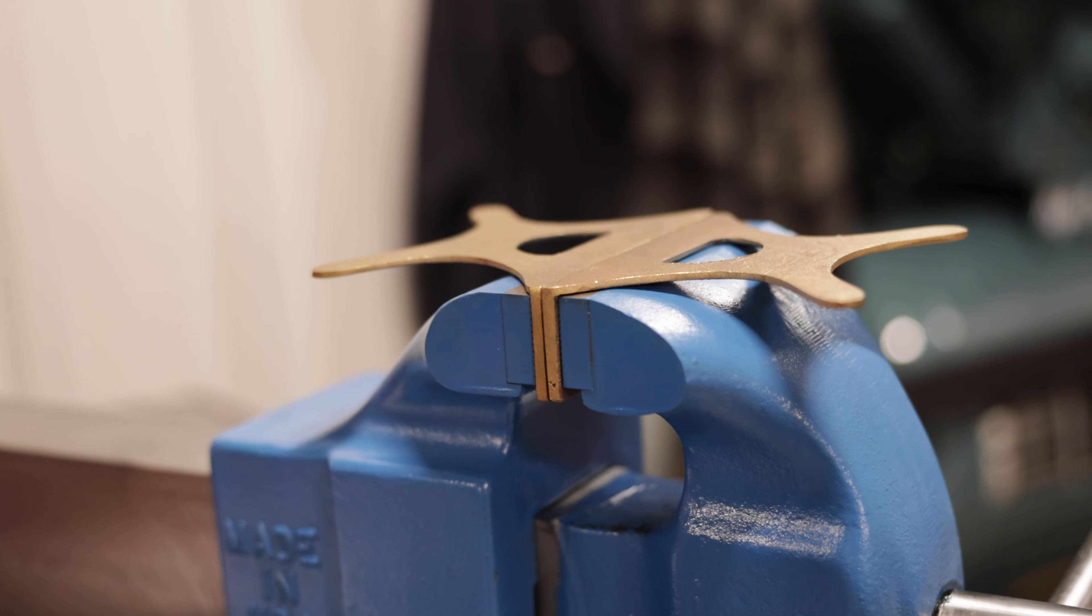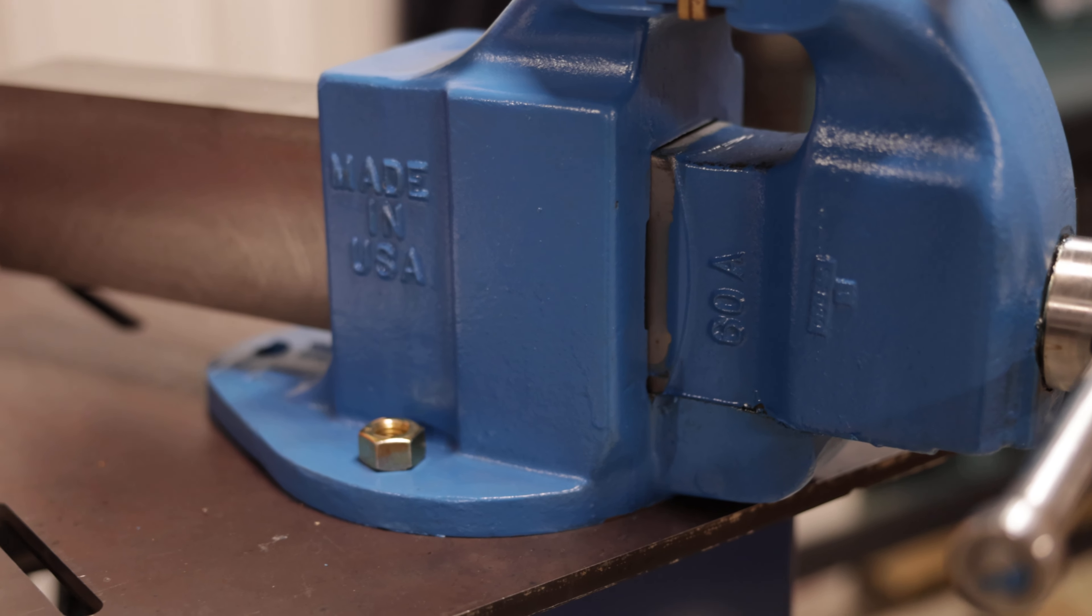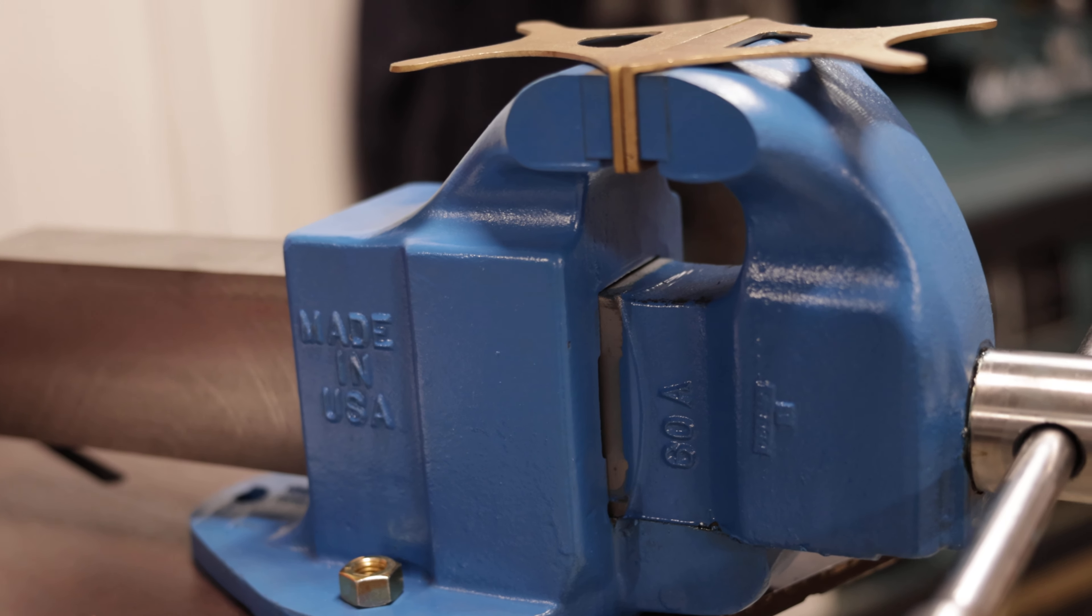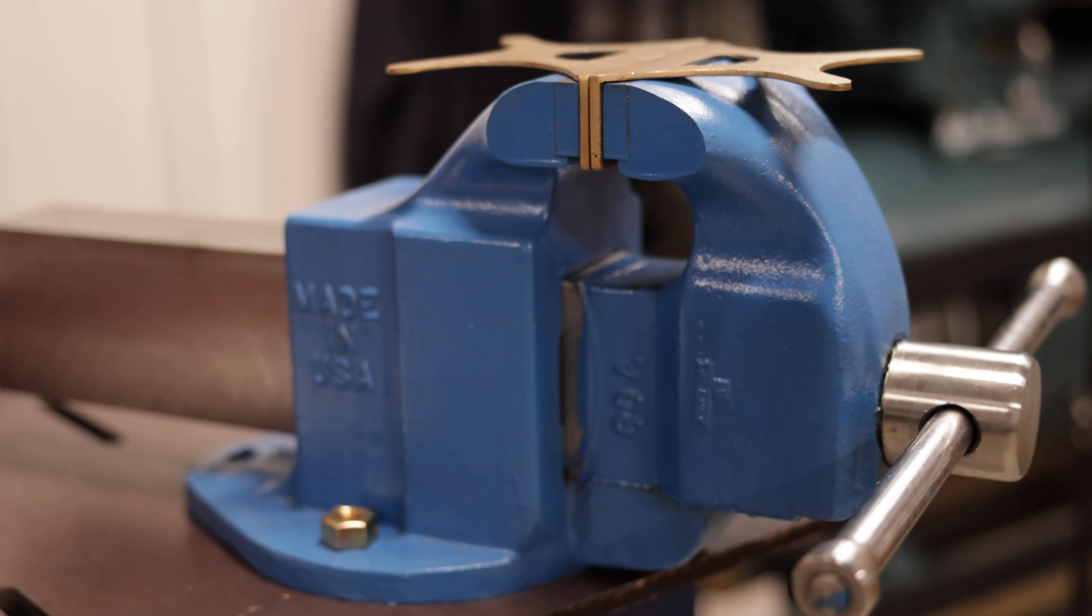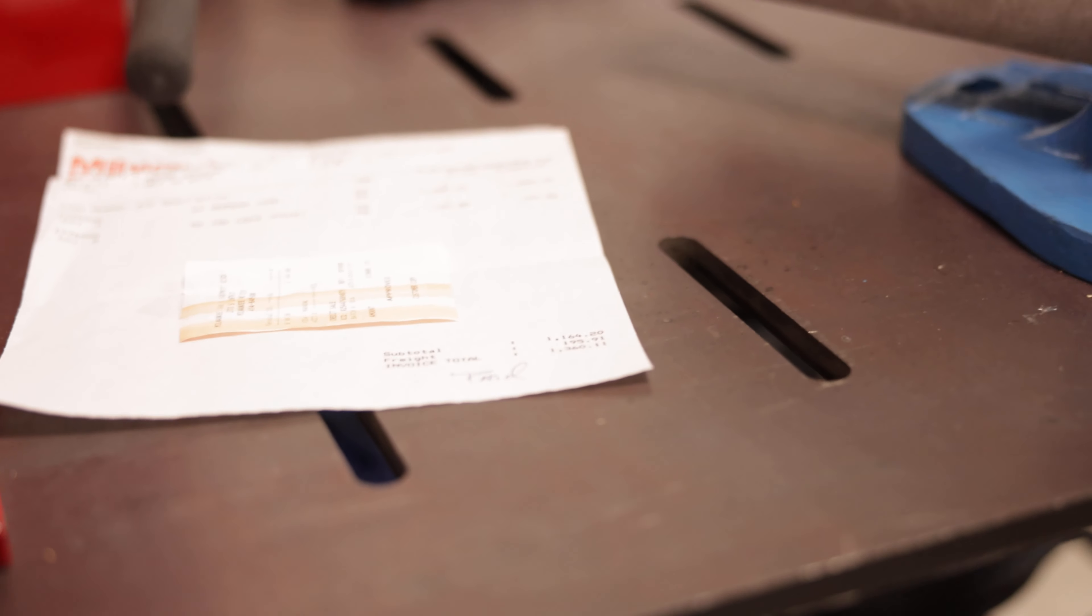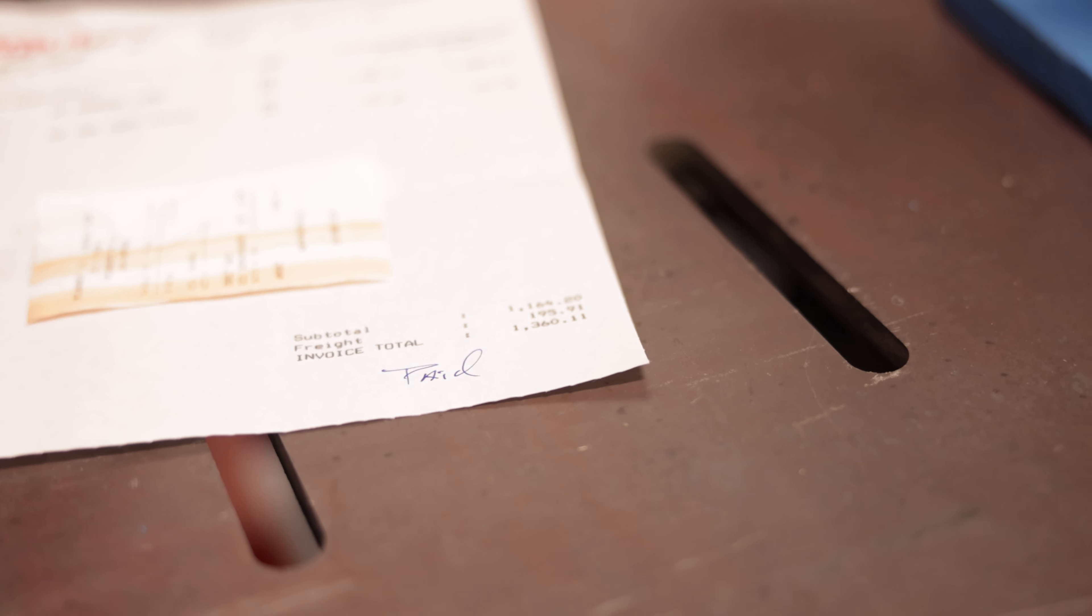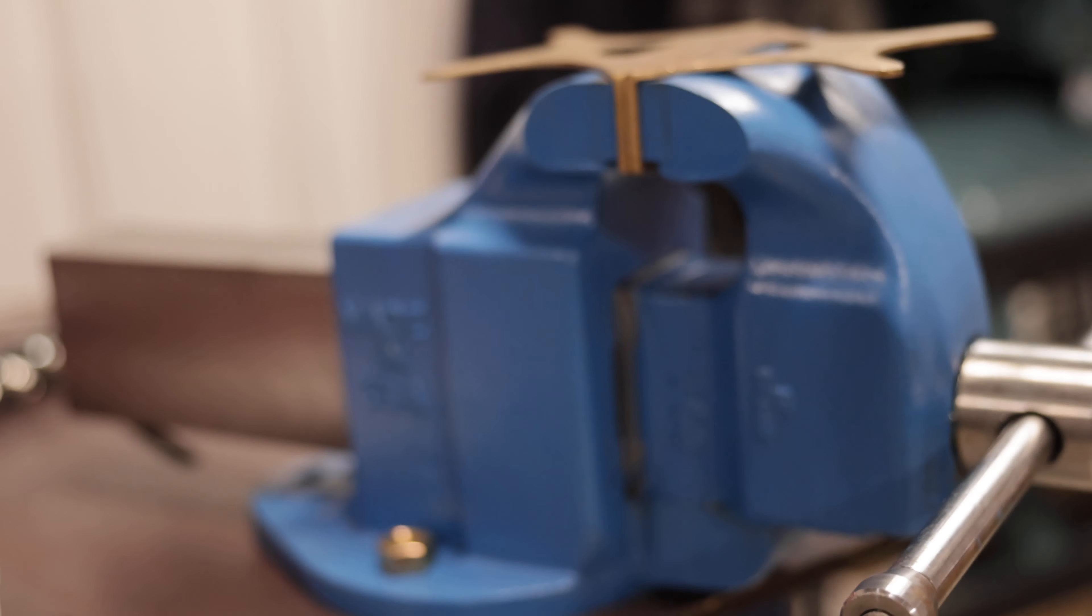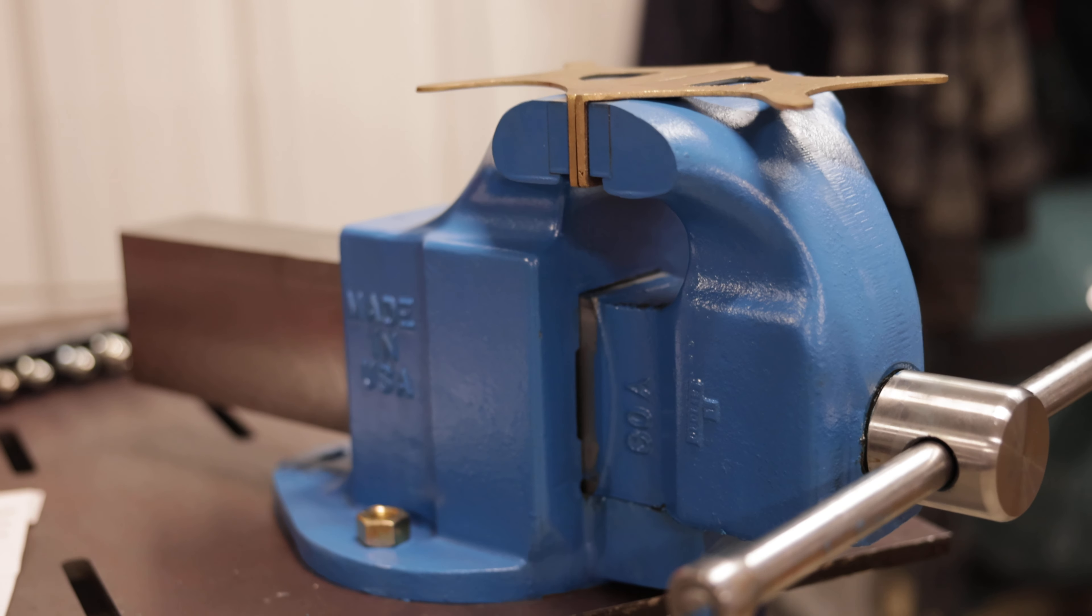And the freight to get this thing over here was about $200 so the grand total was about $1,360 just to get it here. But it should be a good investment for our productivity here in the shop. We'll be able to clamp down on whatever tubing or material that we need to get a grip on.